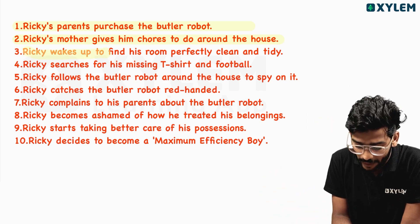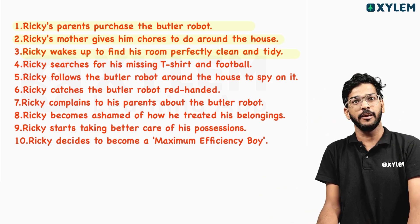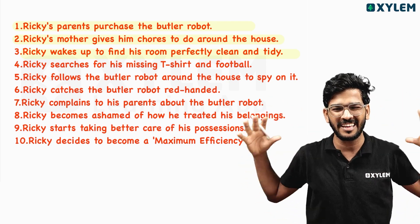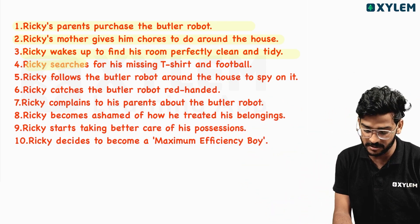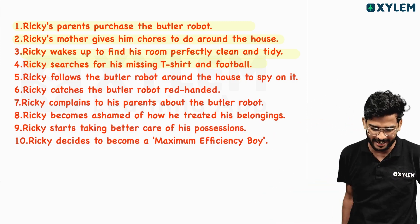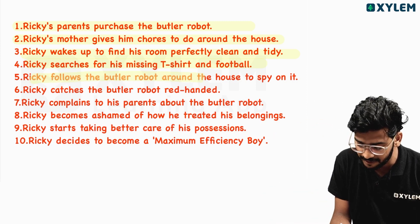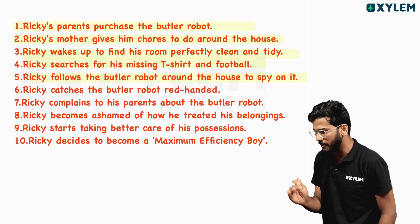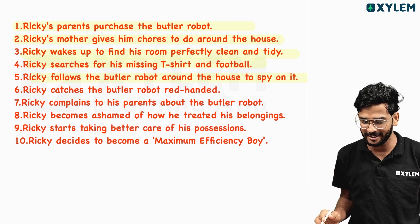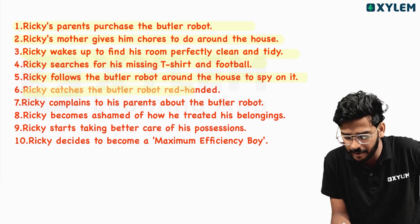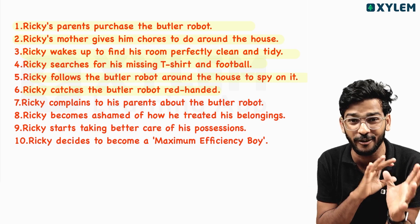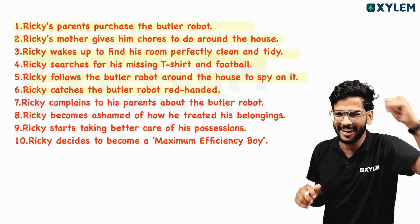Rikki wakes up to find his room perfectly clean and tidy. He's cleaning his room. Rikki is searching for his missing t-shirt and football. Rikki follows the butler robot around the house to spy on it. He's looking for his t-shirt and football. Rikki catches the butler robot red-handed.